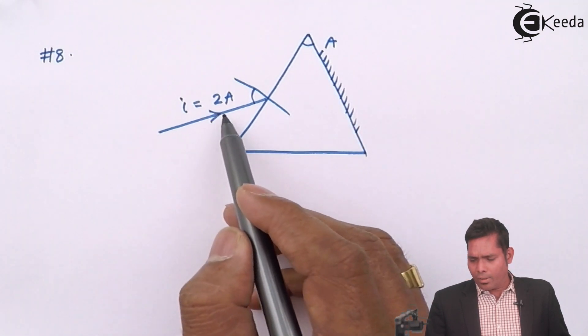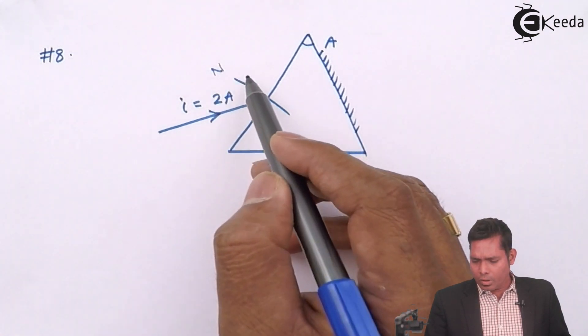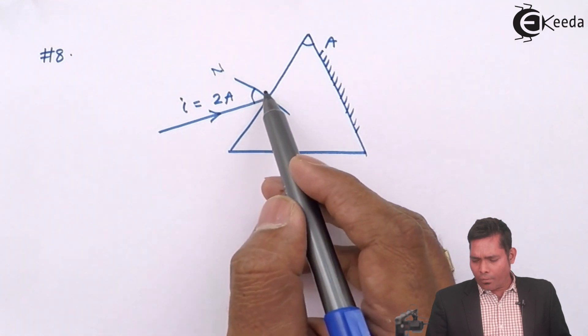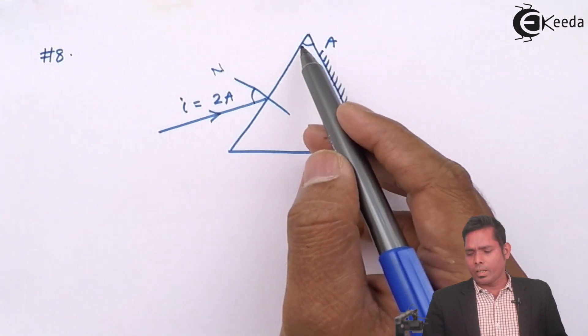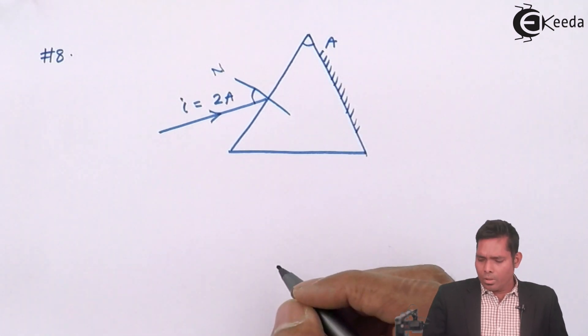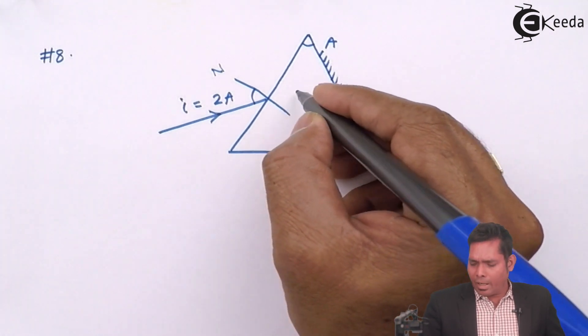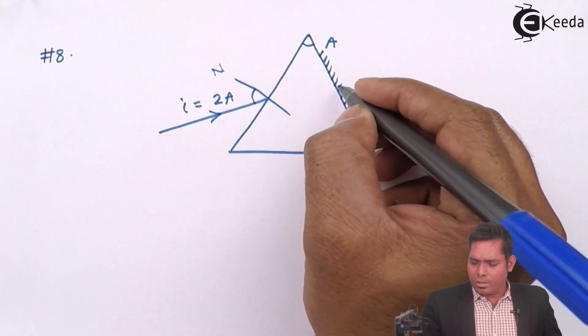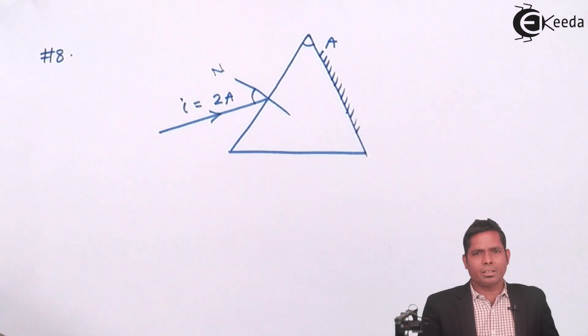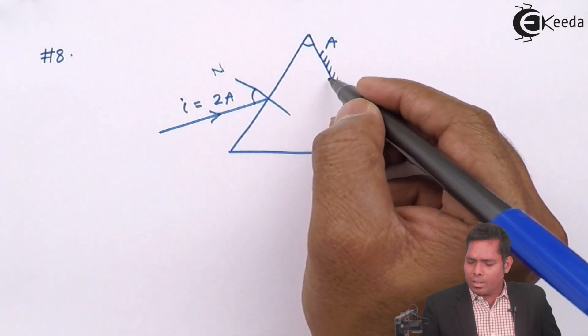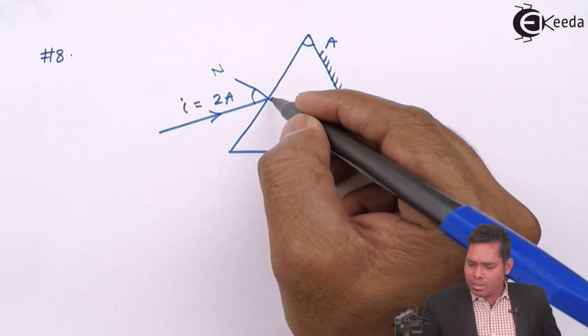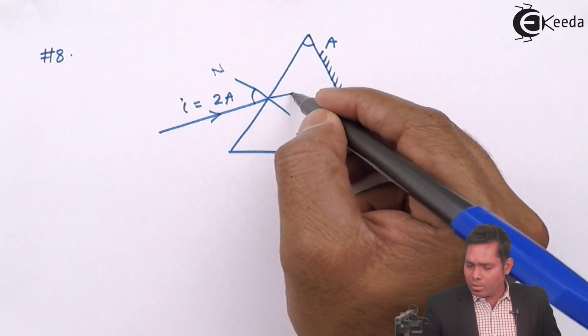This ray, the incident ray, hits the surface at an angle of incidence of 2A, twice the angle of the prism. It will undergo refraction and finds this surface and after reflection, it comes back and follows the same path.